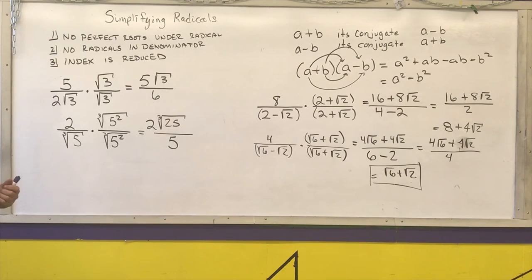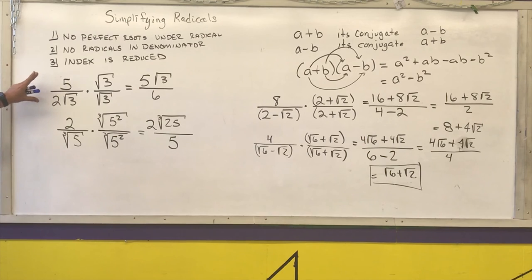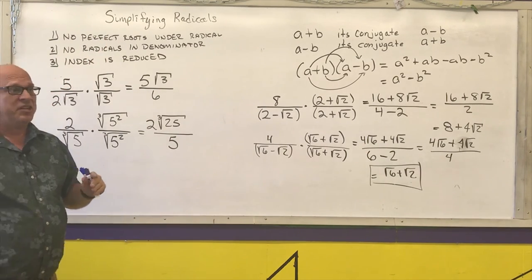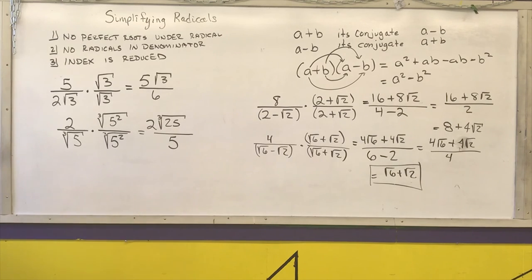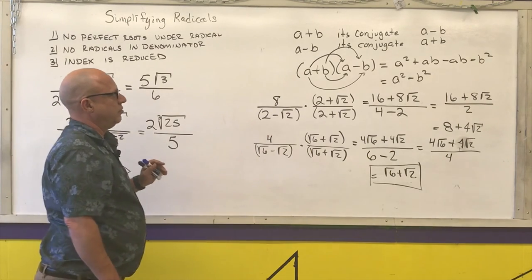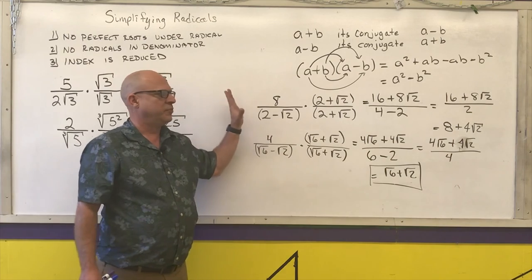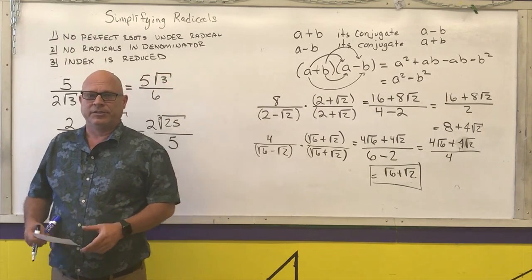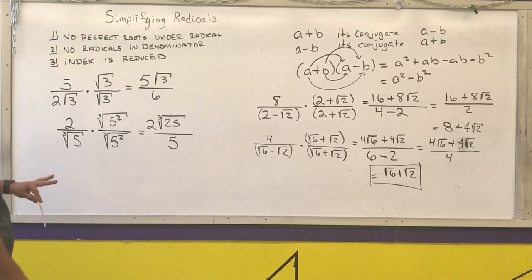For those in eighth grade, I only need you to be able to pull perfect square roots out from underneath radicals. For those in Algebra 1 and Geometry, I expect you to pull perfect roots of any index out. It's when we get to Algebra 2 level and above that we worry about rationalizing denominators. Those are the examples, and that will be it for this video.